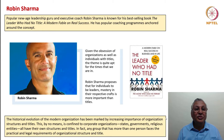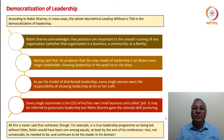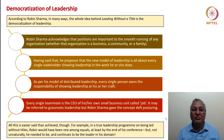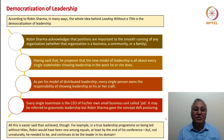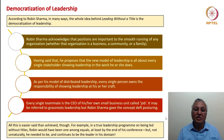According to Robin Sharma, the whole idea behind leading without a title is the concept of democratizing leadership. He acknowledges that positions are important to the smooth running of any organization — whether a business organization, a community, or a family. He proposes a model of distributed leadership in which every single stakeholder shows leadership in the work he or she does — an employee behaves as an owner of the craft and the responsibility to deliver. Every single teammate is considered as the CEO of the business unit or work unit, viewing the job as a responsibility akin to the CEO's responsibility for a company.